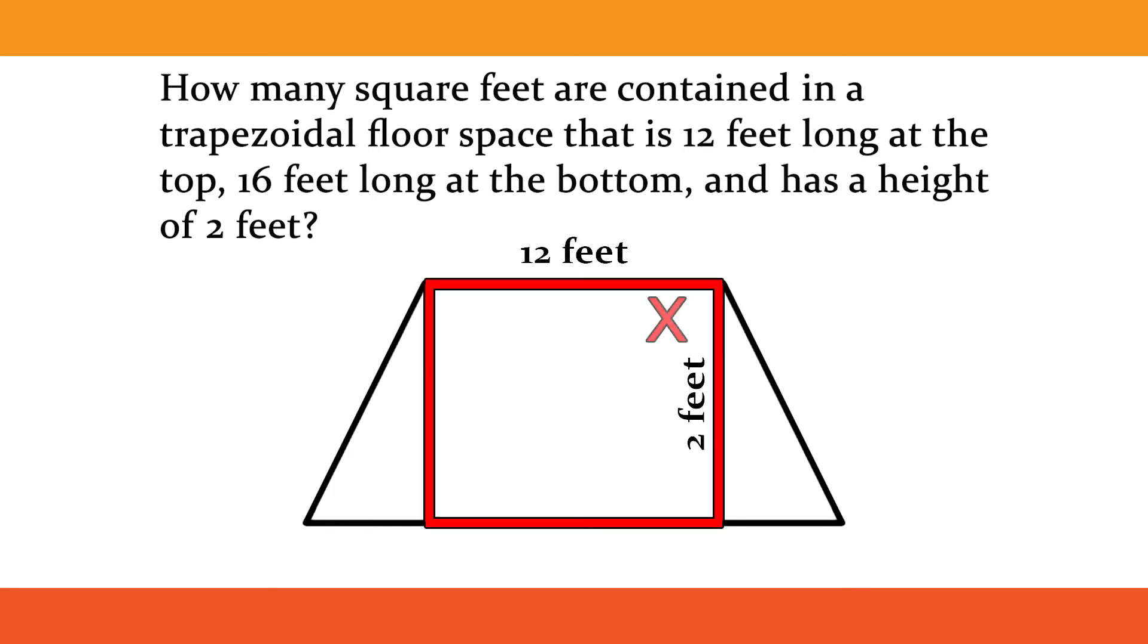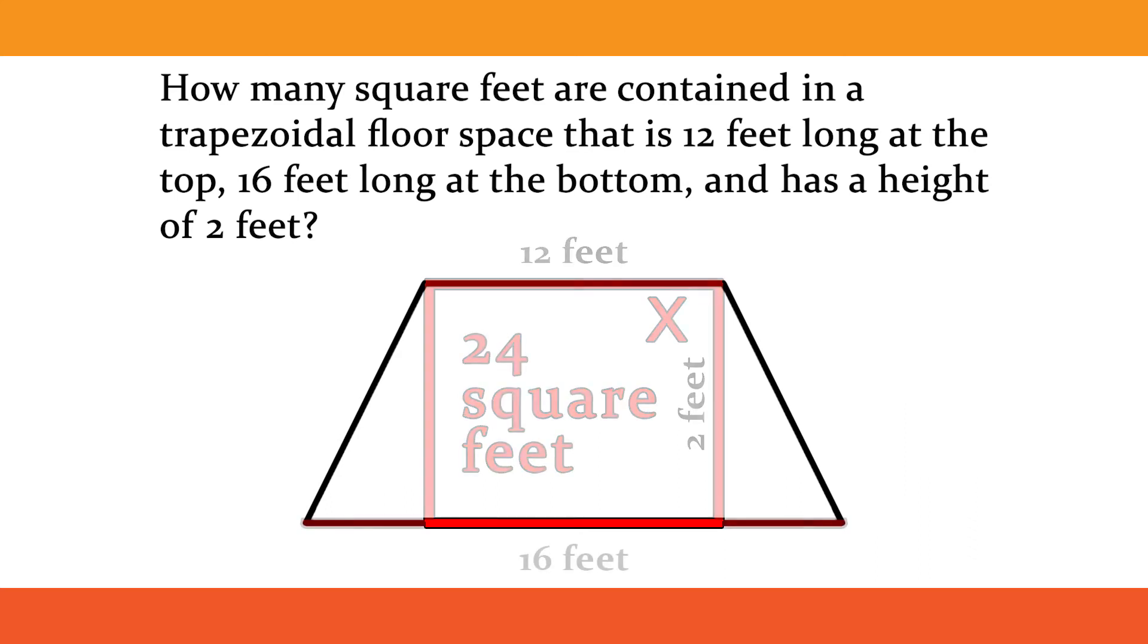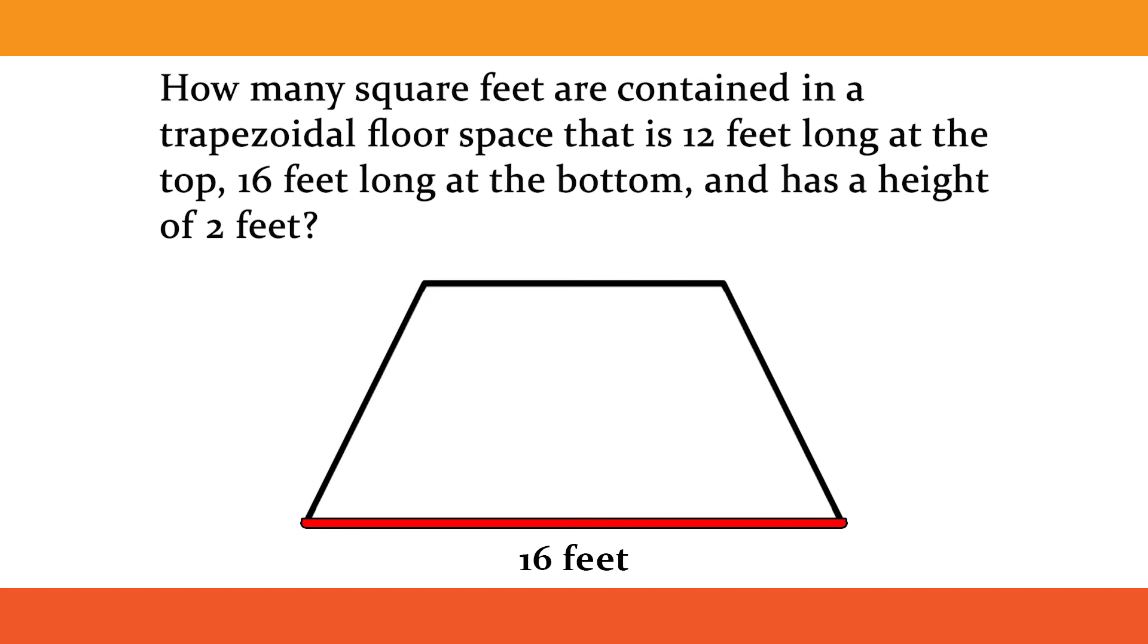For the rectangle, we multiply 12 feet times 2 feet to equal 24 square feet. We know the entire length of the lower line is 16 feet, but we need to remove the 12 feet from the middle to find the lengths of the triangle areas. 16 minus 12 equals 4.